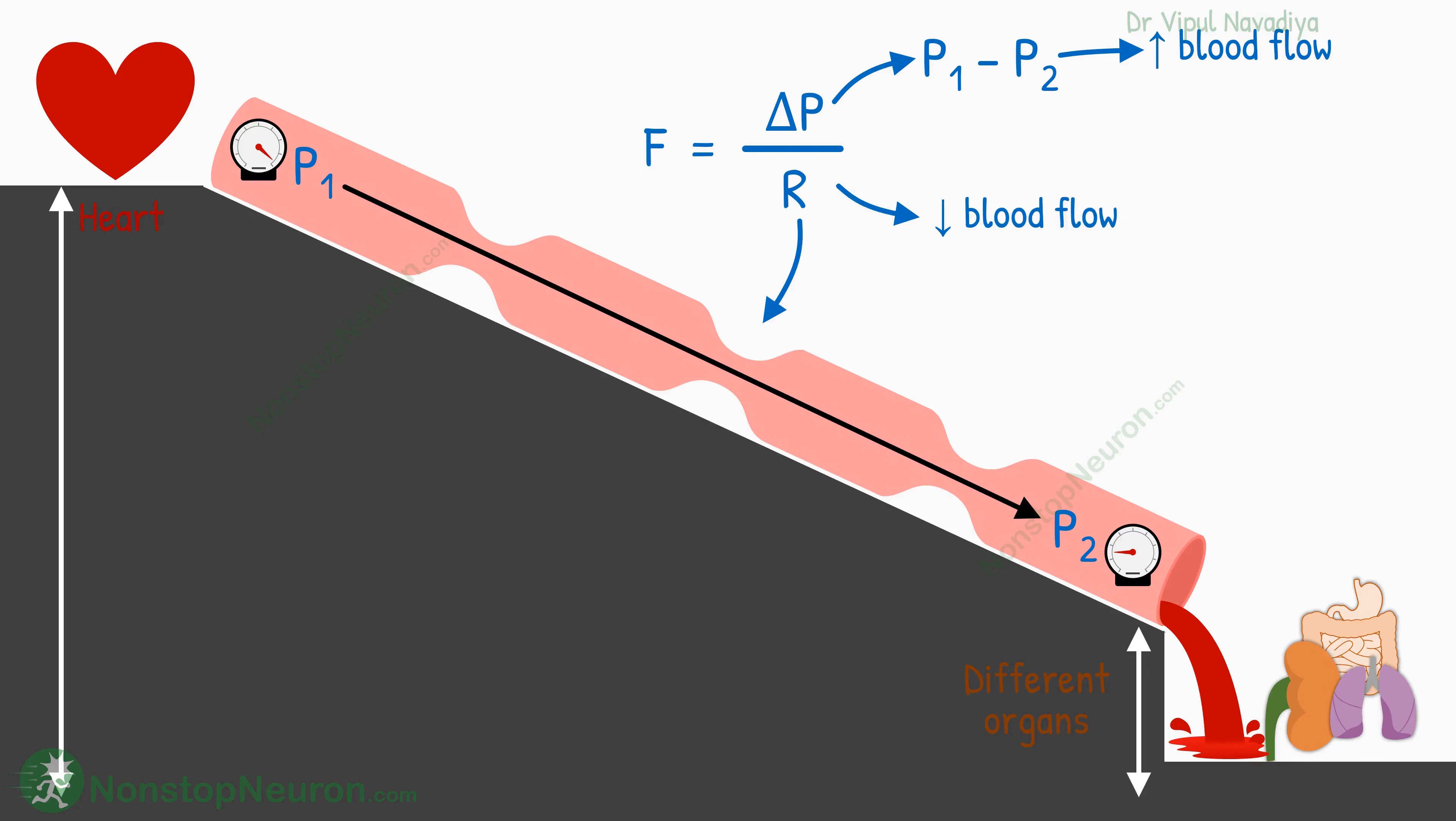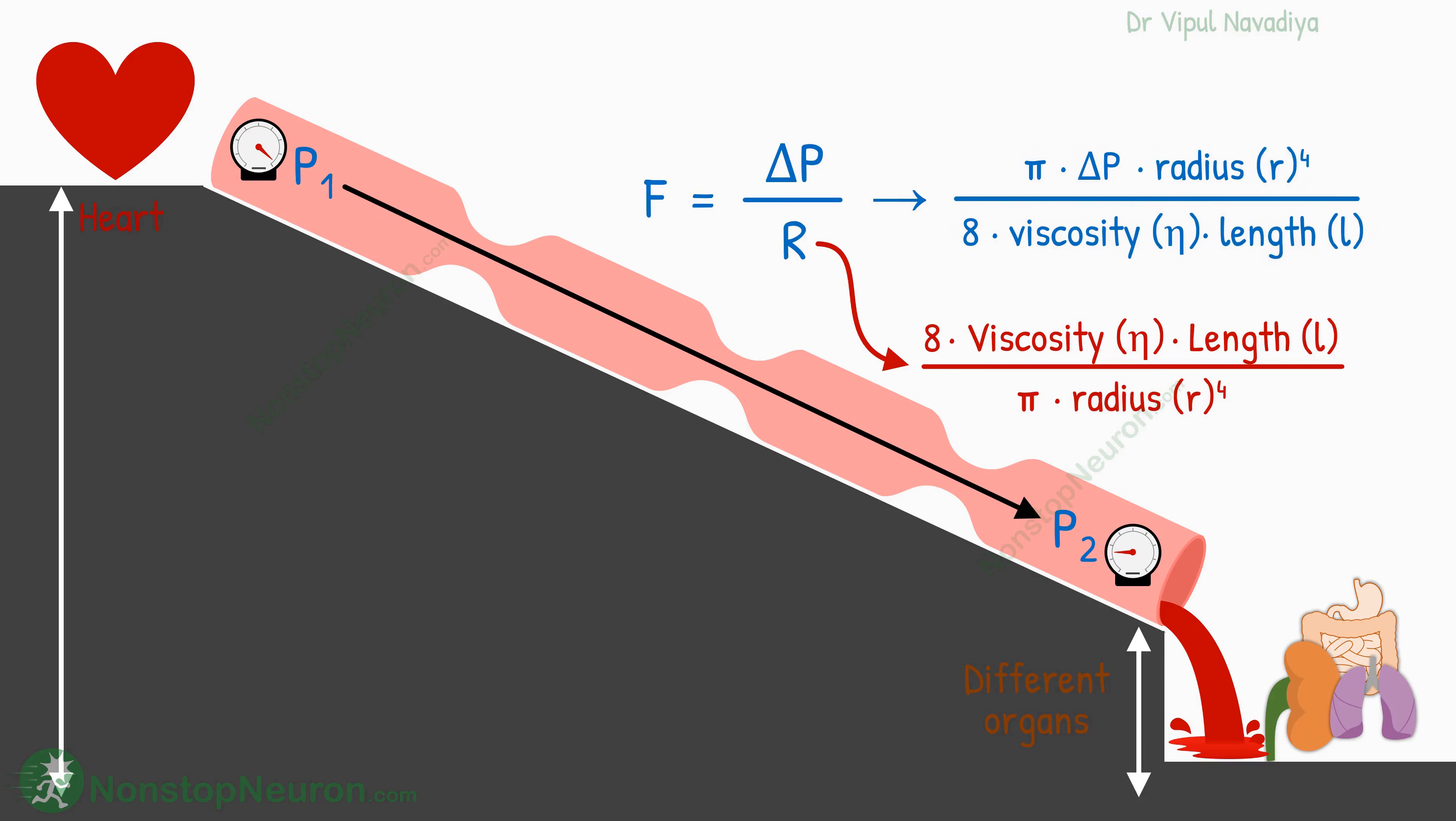Okay, if that was too easy for you, let's go one step further. In the video on resistance to blood flow, we discussed in detail how resistance depends on the viscosity of blood and the length and diameter of blood vessels. If we plug in these factors here, we can see that the flow is proportional to the pressure gradient and radius to the fourth power, and inversely proportional to the viscosity of blood and length of the blood vessel.